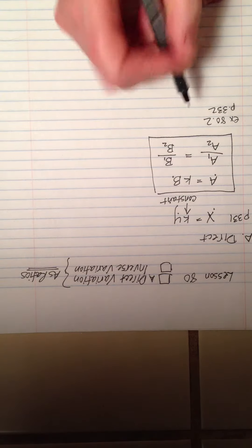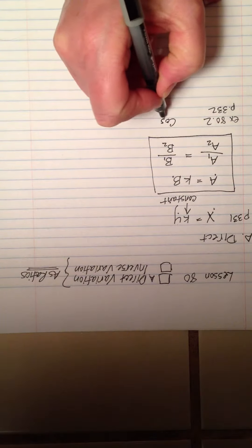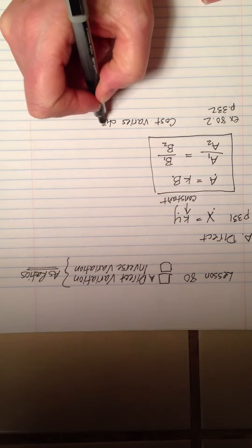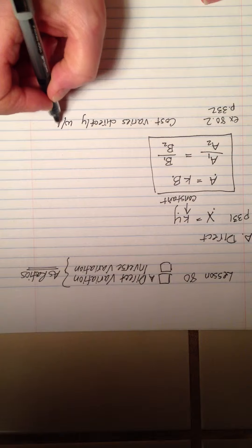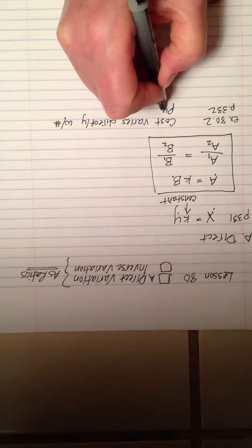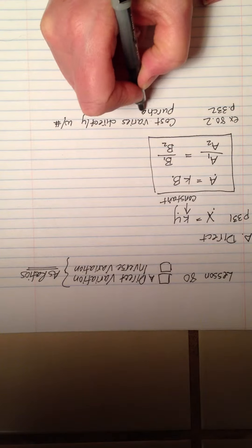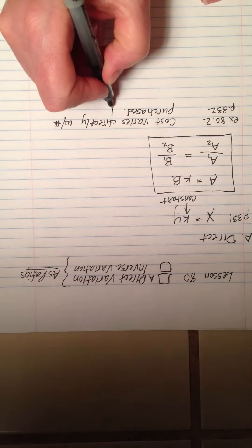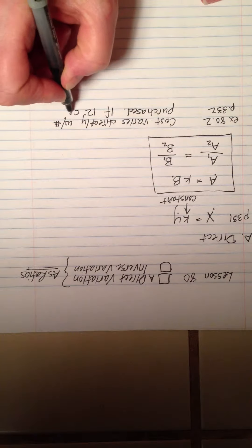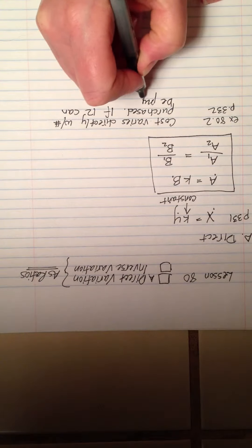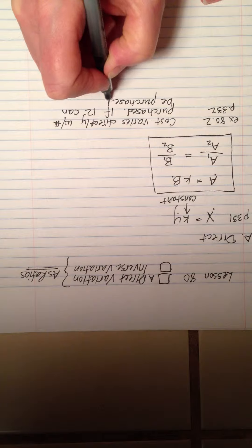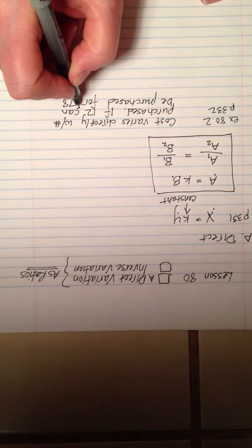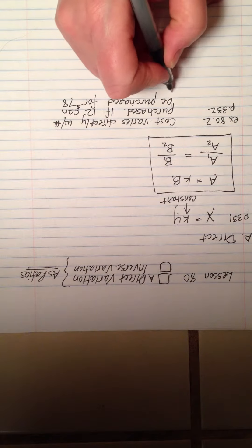Cost varies directly as the number purchased. Well, that makes sense, doesn't it? The more you buy, the more the cost goes up. We can relate, right? If 12 can be purchased for $78, how much would 42 cost?